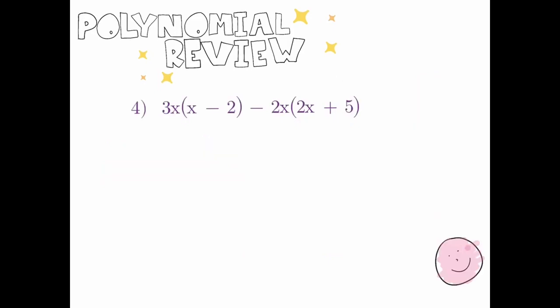For our last example, we have two brackets with terms inside and terms outside the bracket. We'll use the distributive property and begin with the first 3x — taking that 3x and multiplying it to the very first term. I first multiply the coefficients, then deal with the variables. There is a 1 on the x, so 3 times 1 gives me 3, and x times x — same base, add the exponents — gives us x squared.